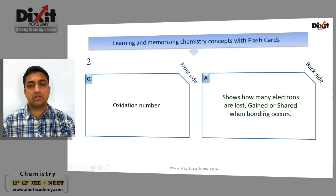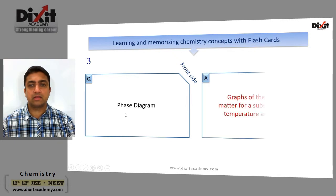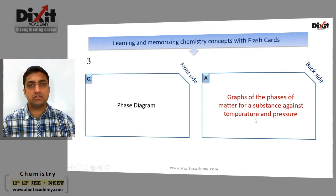Another example: oxidation number — it shows how many electrons are lost, gained, or shared when bonding occurs. Phase diagram: graphs of phases of matter for a substance plotted against temperature and pressure.